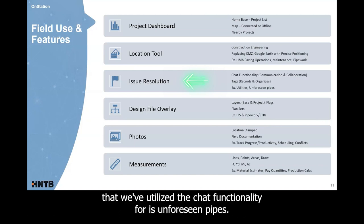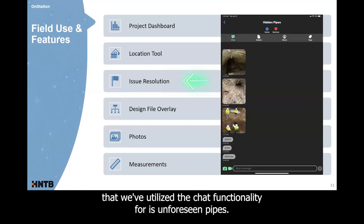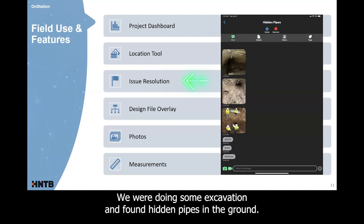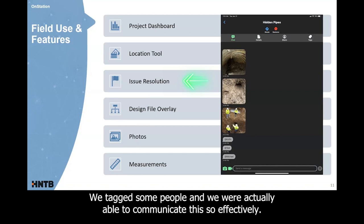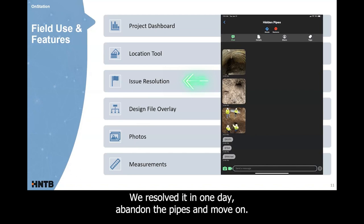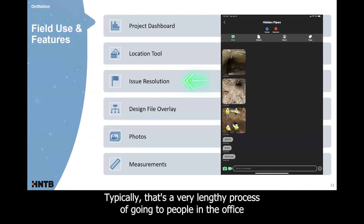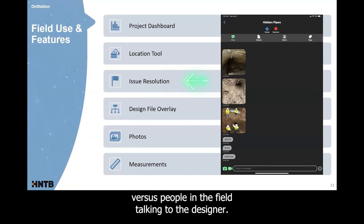One of the examples that we've utilized the chat functionality for is unforeseen pipes. We were doing some excavation and found hidden pipes in the ground. As you can see from the photo, one of our inspectors sent some photos of the pipes that we found. We tagged some people and we were actually able to communicate this so effectively we resolved it in one day, abandon the pipes and move on. Typically that's a very lengthy process of going to people in the office versus people in the field talking to the designer. But everybody was involved in this chat functionality so we mesh the office and field which is a nice thing to do just to get things done and streamline the process.